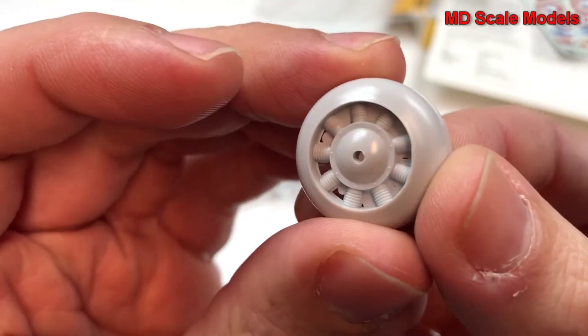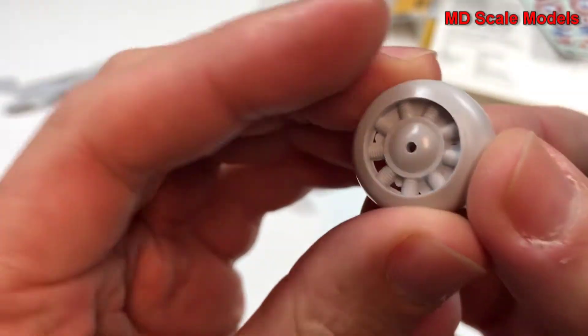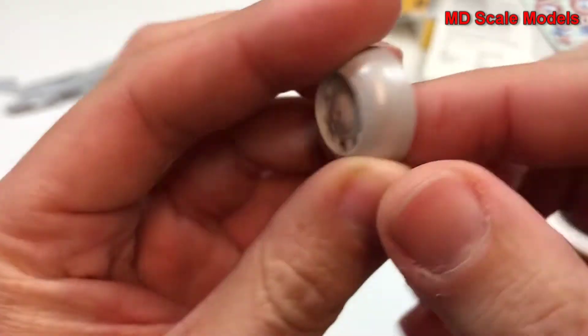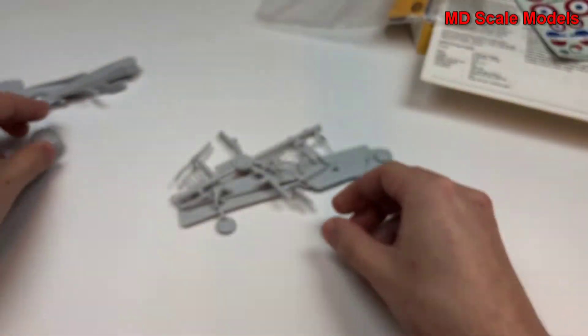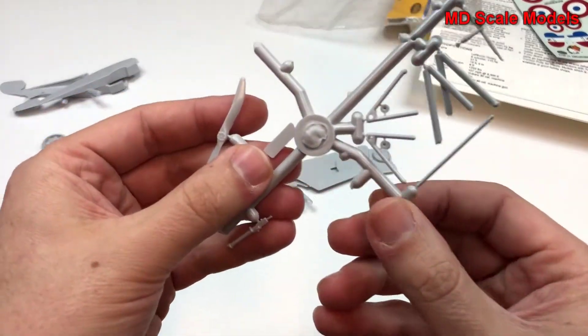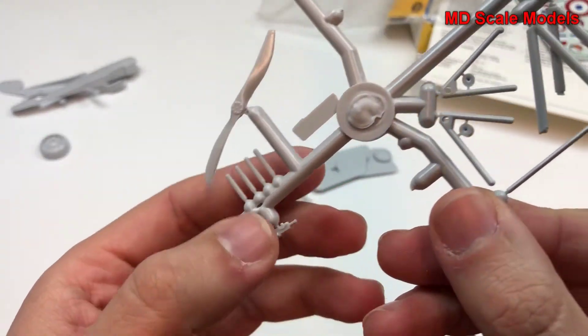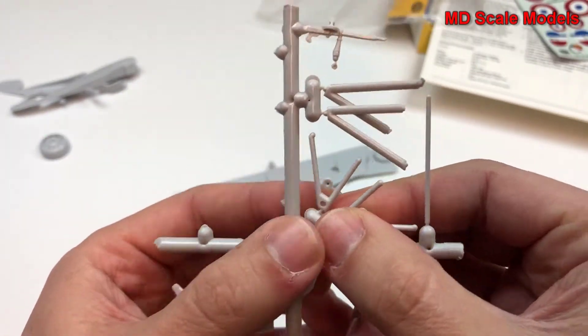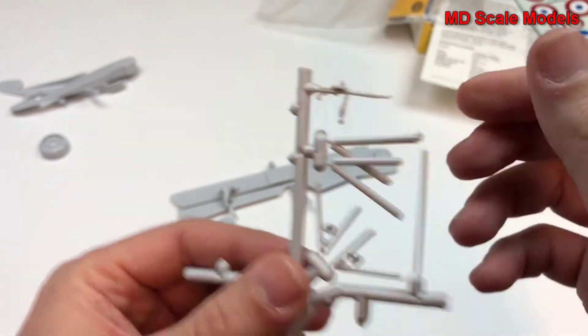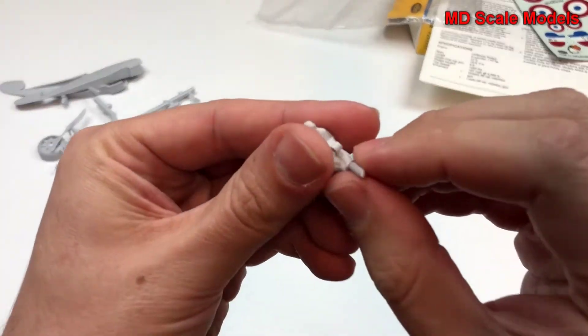Here's our engine cowling with the engine molded in, unfortunately with some flashing on the inside there. Here's our propeller, machine gun, our landing gear, another gun. We do have a pilot.